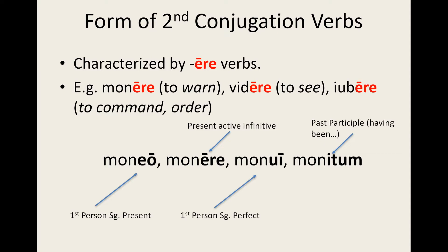These are shown here for the verb monēre, which means 'to warn.' The principal parts are moneo, monere, monui, and monitum. Note that second conjugation verbs have a first person singular present form that ends in -eo. Take for example moneo, meaning 'I warn,' video meaning 'I see' from videre, and iubeo from iubere which means 'to command' or 'to order.'